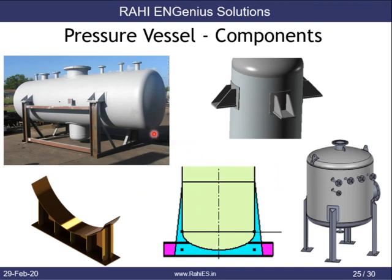There are different types of supports: saddle supports for horizontal vessels, skirt supports for tall vertical vessels, leg supports for spherical or smaller vessels, and bracket supports.